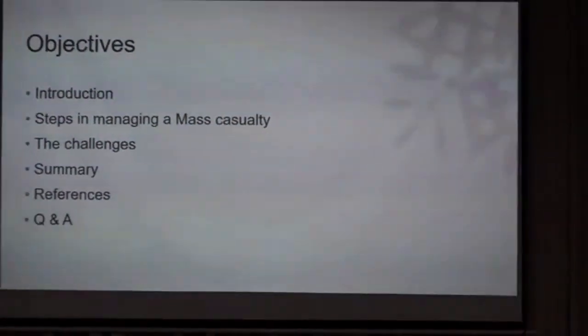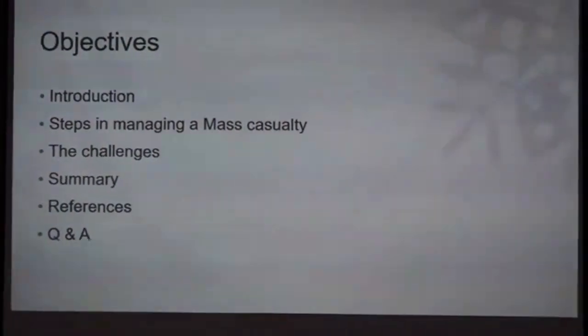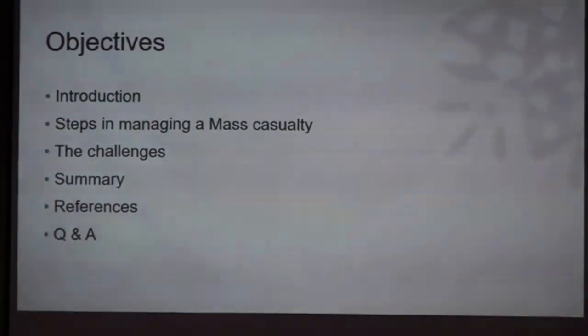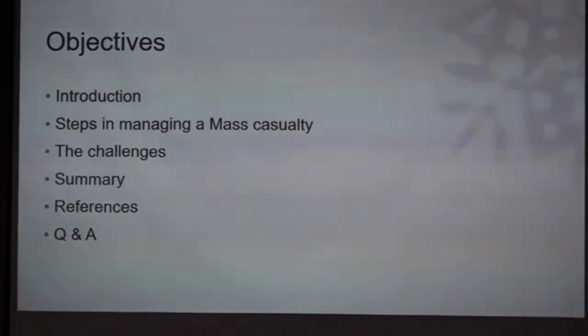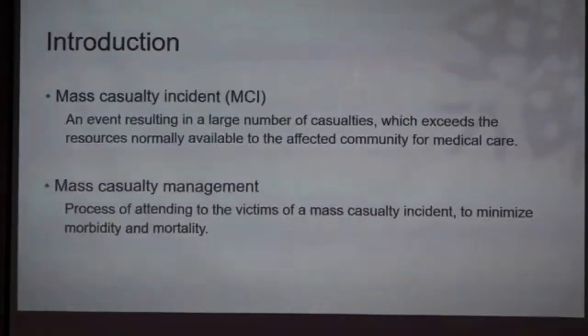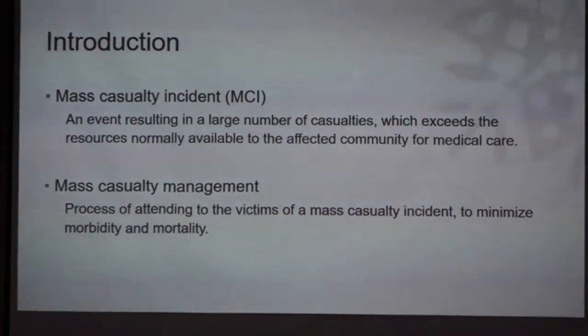A brief history of disaster management planning: what brought our attention to the need for such a plan was the tsunami that occurred in 2004. Before that, we had war, bomb blasts, and shooting incidents, but nothing on the scale of the tsunami, which had casualties exceeding thousands. Shortly afterwards, in 2005, the Disaster Management Act was brought in, and all government agencies, ministries, and corporations were required to have disaster preparedness plans — the mass casualty plan for hospitals. Mass casualty incidents are defined as casualties exceeding the resources available in the community, and the management goal is to minimize morbidity and mortality.